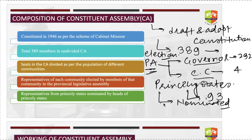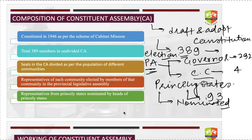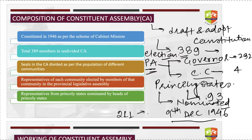Although there were 389 seats with provisions for members from all over India, the Muslim League boycotted proceedings and later formed their own Constituent Assembly in Pakistan. Princely states also boycotted. As a result, out of 389 members, only 211 attended the first meeting on 9th December 1946.